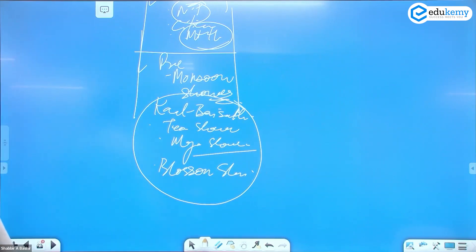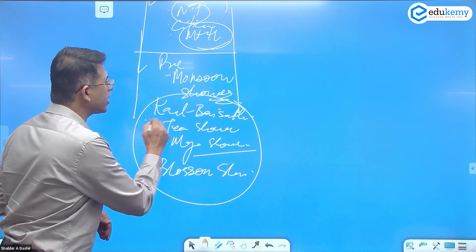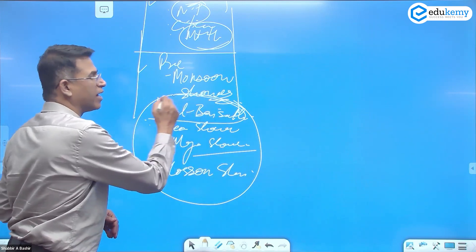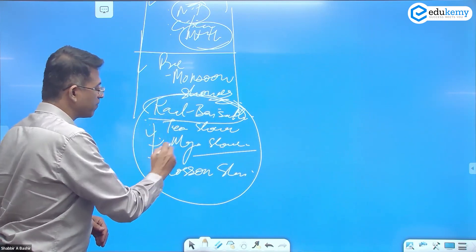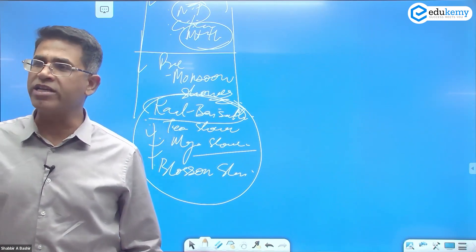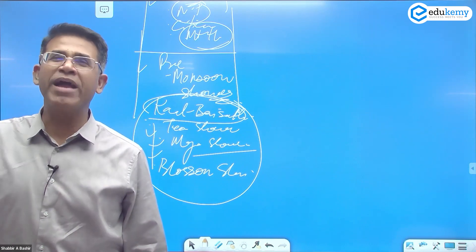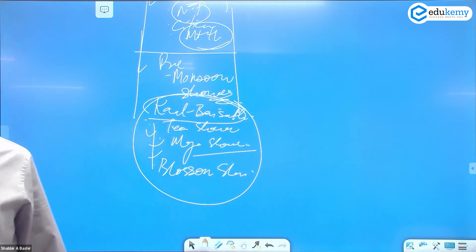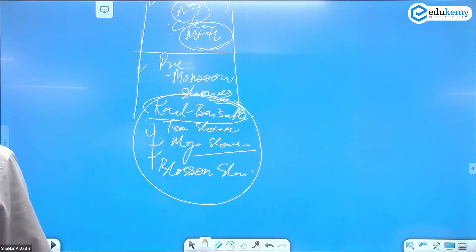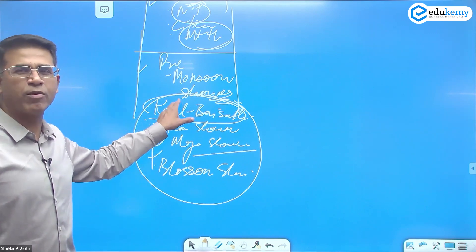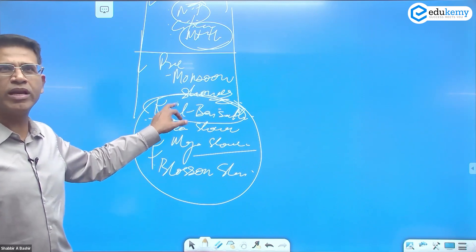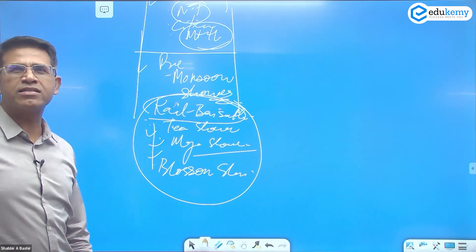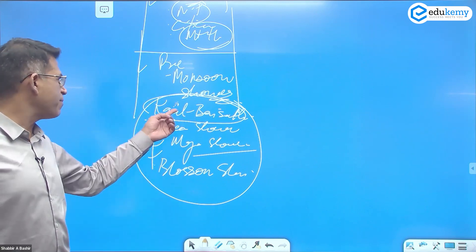Kalbaisakhi is in Bengal. So are these pre-monsoon showers harmful or beneficial? Kalbaisakhi is harmful — it impacts the harvest. That's why 'Kal' means death. The rest — tea showers, mango showers, blossom showers — are beneficial: they help tea growth, mango ripening, and blossom ripening.